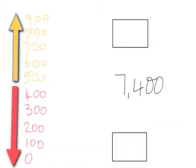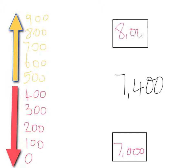For the last part of this tutorial we'll be rounding to the nearest thousand, and we'll begin with seven thousand four hundred. We now look at the hundreds digit to determine whether we round upwards or downwards. Zero, one hundred, two hundred, three hundred and four hundred result in the number rounding downwards, whereas five hundred, six hundred, seven hundred, eight hundred and nine hundred round the number upwards. Seven thousand four hundred lies between seven thousand and eight thousand, and the four hundred tells us to round the number down. So seven thousand four hundred is seven thousand to the nearest thousand.